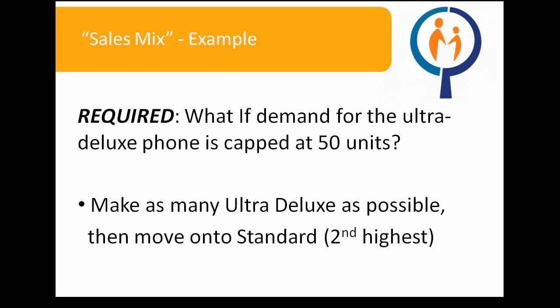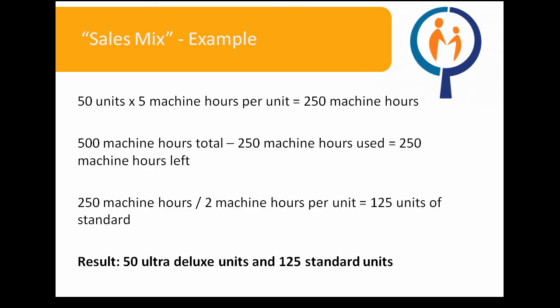What if demand for the ultra-deluxe phone is capped at 50 units? In this case, we want to make as many ultra-deluxe phones as possible, then move on to producing standard phones — the product with the second highest contribution margin. 50 ultra-deluxe phones require 250 machine hours, leaving 250 machine hours remaining. At 2 machine hours per standard phone, we can produce an additional 125 standard phone units. Our new optimal production plan involves building 50 ultra-deluxe phones and 125 standard phones.